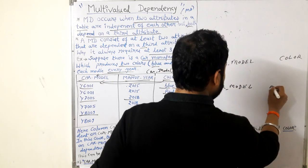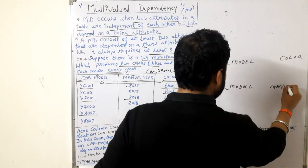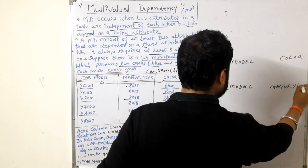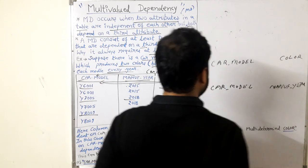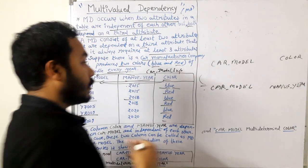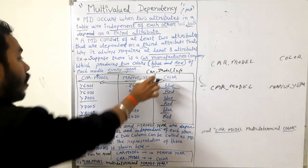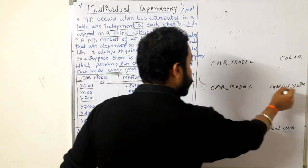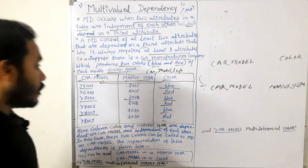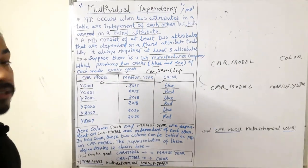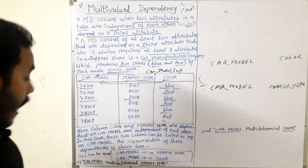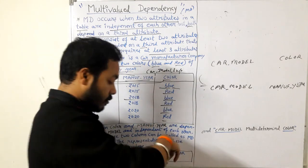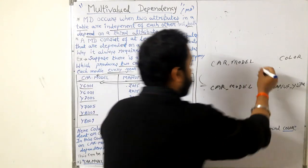Similarly car model. Let me first write it then I will explain. We have manufacturer year. As you have seen, car model is implying both of them - color and manufacturer are independent attributes. As multi-valued dependency exists, to represent that we use a symbol, this one.